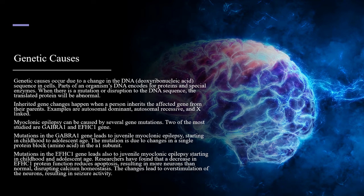Mutations in the EFHC1 gene also lead to juvenile myoclonic epilepsy starting in childhood and adolescent age. Researchers have found that a decrease in EFHC1 protein function reduces apoptosis, resulting in more neurons than normal, disrupting calcium homeostasis. The changes lead to overstimulation of the neurons, resulting in seizure activity.